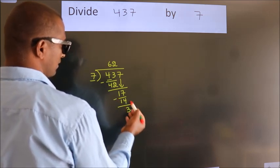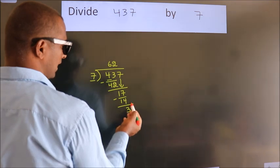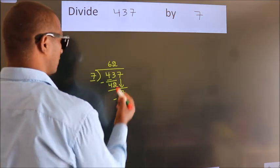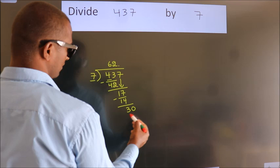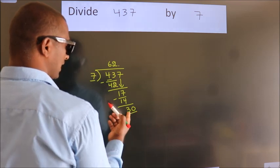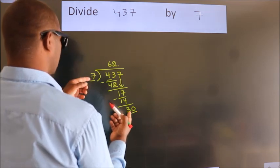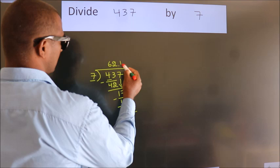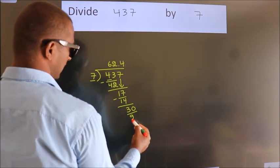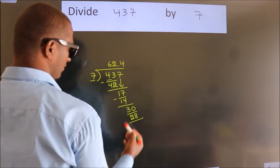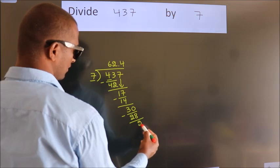After this, there are no more numbers to bring down. So what we do is put a dot and take 0, giving us 30. A number close to 30 in the 7 table is 7×4=28. Now we subtract and get 2.